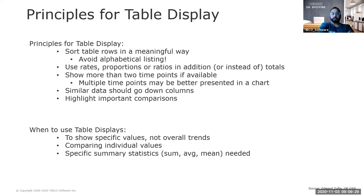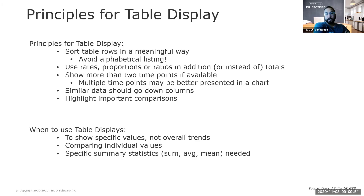Show more than two time points if available so you can make comparisons. Similar data should go down columns. When should you use tables? Charts are used for quick observations of trends, broad comparisons, and when you're not looking for specific values. But if those specific values are very important, that's when you want to consider tables. Also if you have fewer than 10 to 15 elements, a table comes in handy. Once you start going beyond 15 to 20 rows, it gets very hard for the human eye to make sense of all the numbers — that's where charts become more valuable.